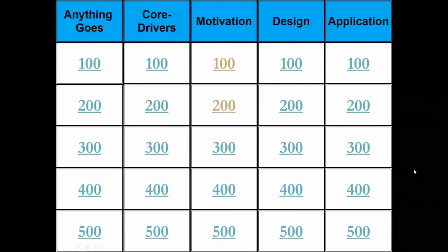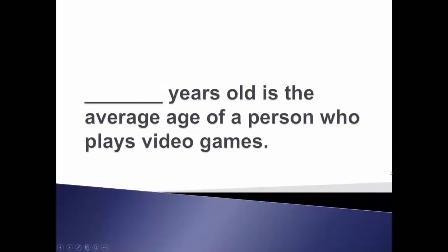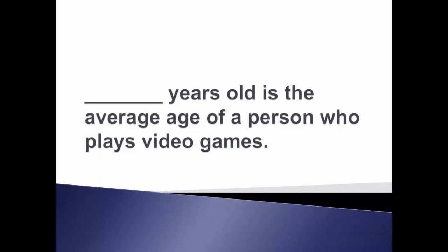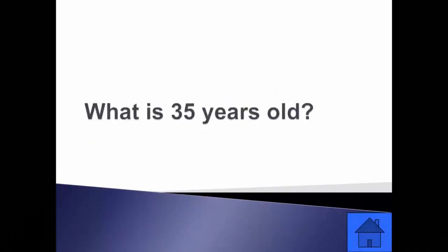Joel chooses Anything Goes for 100. The clue: blank years old is the average age of a person who plays video games. Daniel says seven — but actually, what is 35 years old? Can you believe that? So keep that in mind as we develop our courses.